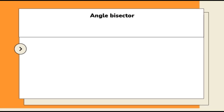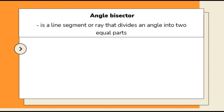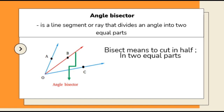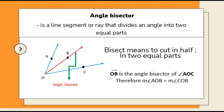Now, let's define angle bisectors. When we say angle bisectors, it is a line segment or ray that divides an angle into two equal parts. When we say bisector or bisect, it means to cut in half, or always remember, into two equal parts. So in this given illustration, line segment OB is the angle bisector of angle AOC. Therefore, the measure of angle AOB is equal to the measure of angle COB.